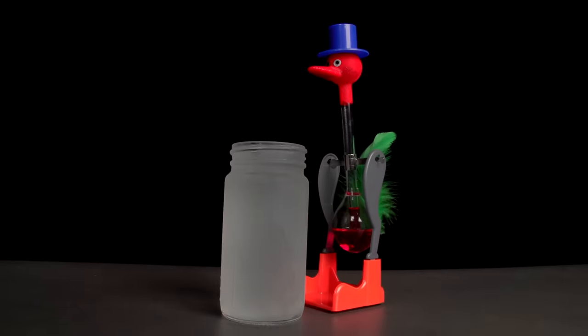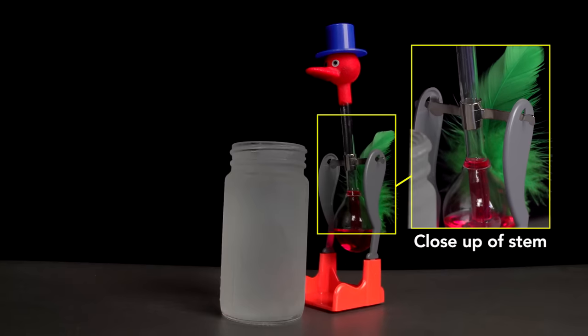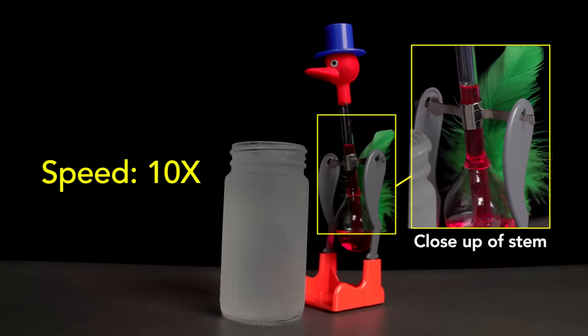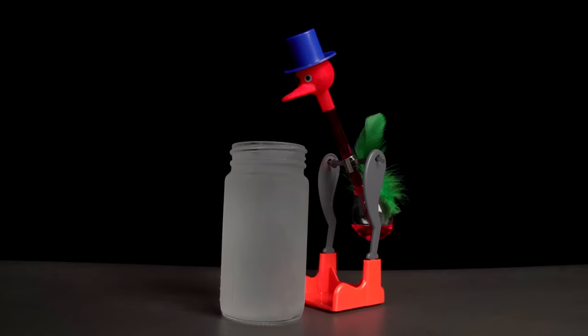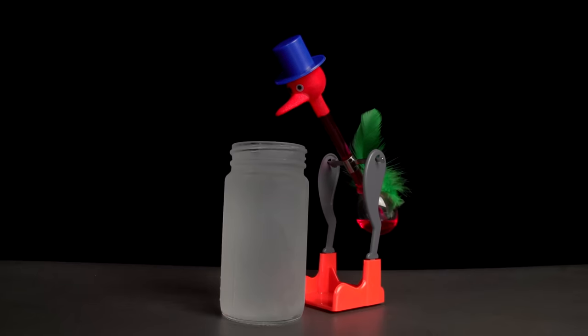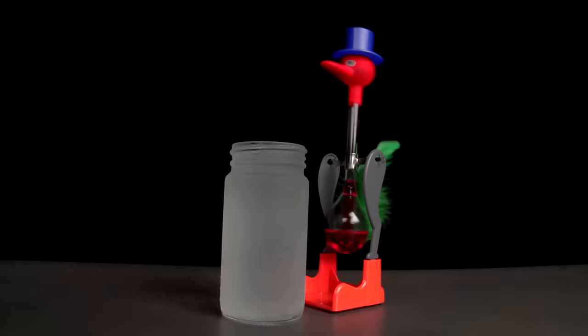It'll take a few seconds for it to start drinking. Notice that all of the action right now takes place in the stem here. As I speed up the action, you see liquid rising and the bird rocking back and forth. If I return to normal speed, you can see the bird slowly, very, very slowly, rock forward until it takes a drink, which it will do again and again.